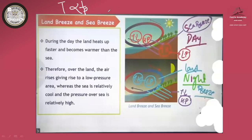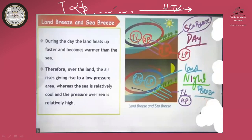During daytime the land heats up very fast because the molecules of solid are closer together. The water bodies heat slowly. Before the water heats fully, there is evaporation — warm water rises as vapor — so the water surface remains relatively cool. Since low temperature gives high pressure over the water, wind blows from the sea — high pressure — to the land — low pressure.